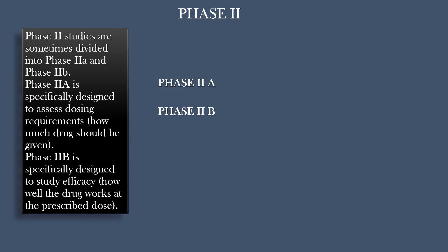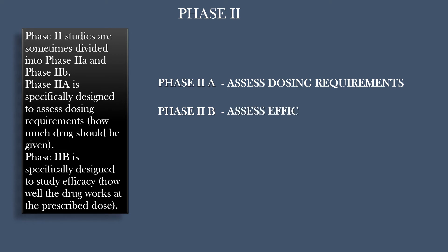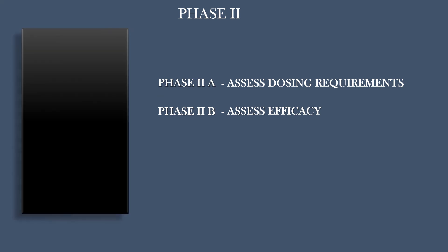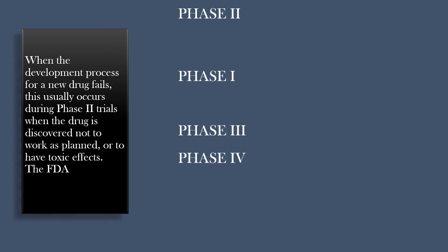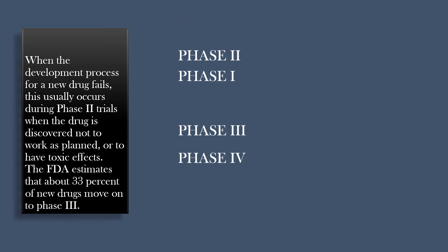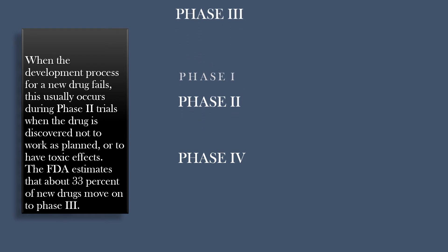Phase 2A is specifically designed to assess dosing requirements — how much drug should be given. Phase 2B is specifically designed to study efficacy — how well the drug works at the prescribed dose. When the development process for a new drug fails, this usually occurs during Phase 2 trials, when the drug is discovered not to work as planned or to have toxic effects. The FDA estimates that about 33 percent of new drugs move on to Phase 3.